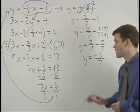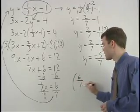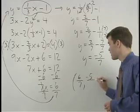So the solution to this system is 6-sevenths, negative 5-sevenths.